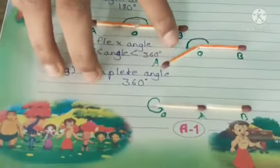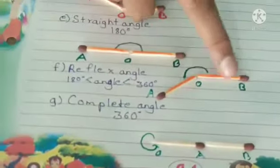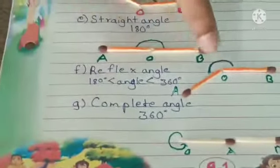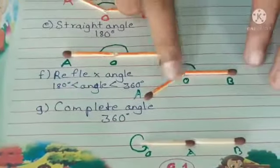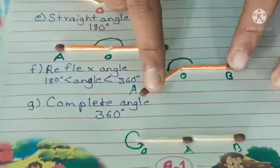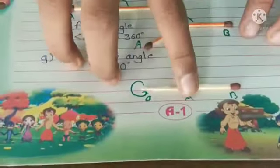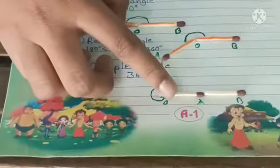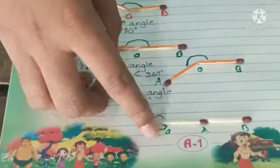After this, we have the reflex angle. Our last angle is complete angle which has a complete rotation of 360 degrees, so we call this angle complete angle.